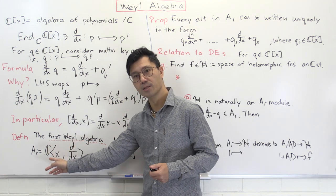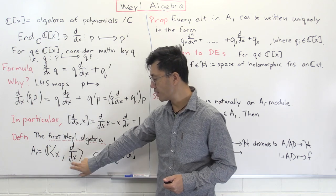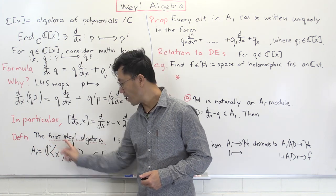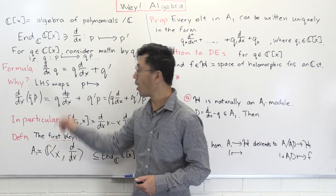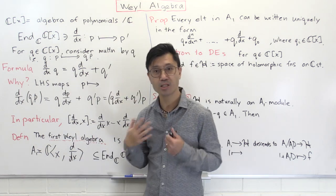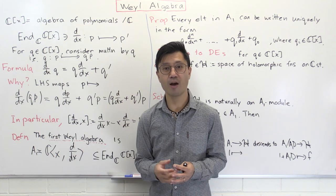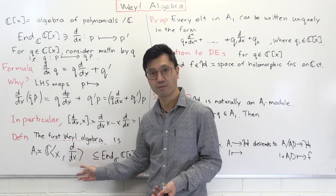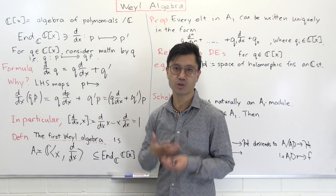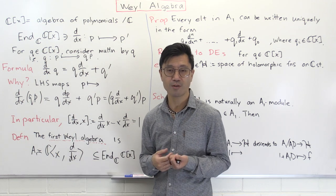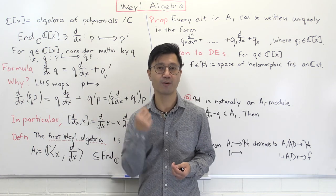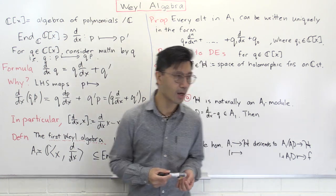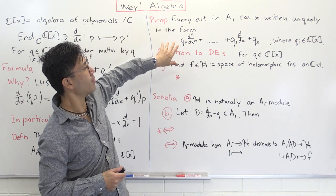Since the first Weyl algebra contains x, it contains the polynomial ring C[x] — all multiplications by polynomials. The same is true with d/dx: you have all polynomials in d/dx as well. A polynomial in d/dx means you have higher powers of d/dx: squaring gives the second derivative, doing it three times gives the third derivative, and so forth — these are just higher order differential operators. Since you can form any product and linear combination of these things, you can generate elements of the form: q_n · (d^n/dx^n) + ... + q_1 · (d/dx) + q_0, where the q_i are polynomials in x.